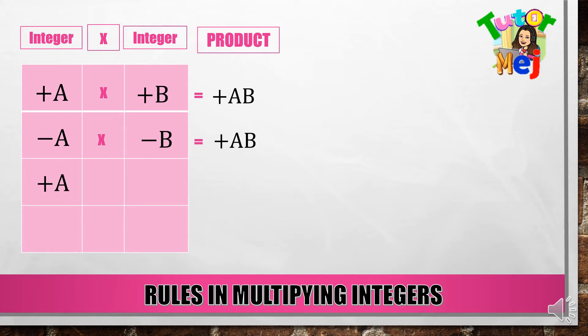Positive A times negative B. Ito ay equal to — positive times negative is negative. Then multiply AB, so ang sagot, negative AB.